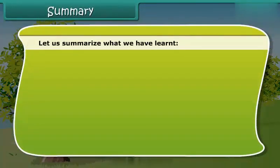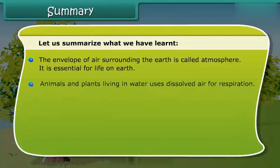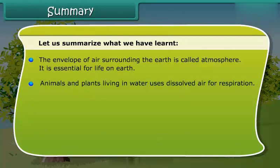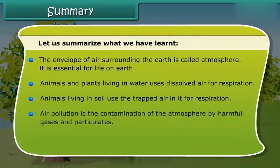Let us summarize what we have learned. The envelope of air surrounding the earth is called atmosphere, and it is essential for life on earth. Animals and plants living in water use dissolved air for respiration. Animals living in soil use the trapped air in it for respiration. Air pollution is the contamination of the atmosphere by harmful gases and particulates, and it can be reduced by taking a few simple measures.